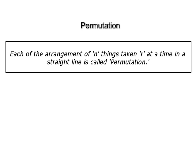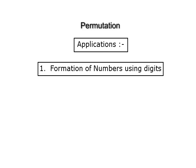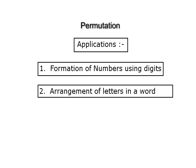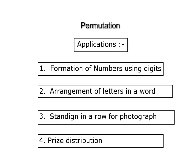Permutation. Each of the arrangements of n things taken r at a time in a straight line is called a permutation. The total number of permutations is given by nPr = n factorial upon (n − r) factorial. Therefore nPn = n factorial. A permutation is used in the following cases: formation of numbers using digits, arrangement of letters in a word, standing in a row for a photograph, prize distribution, and in general any ordered arrangement.